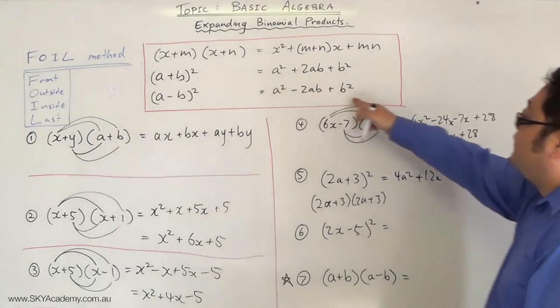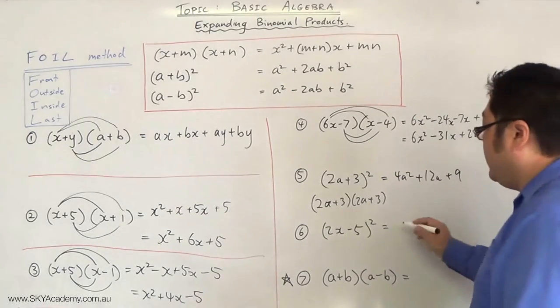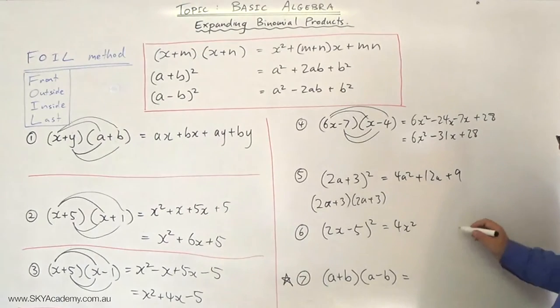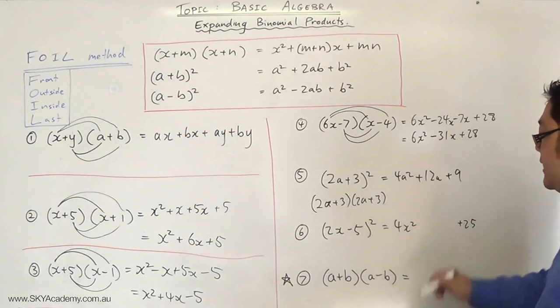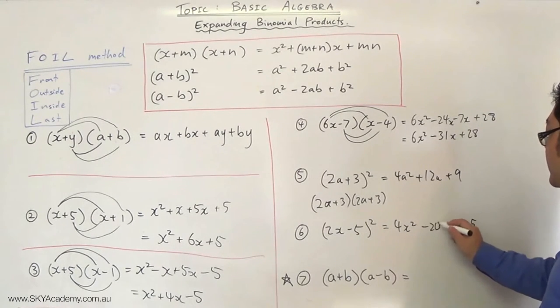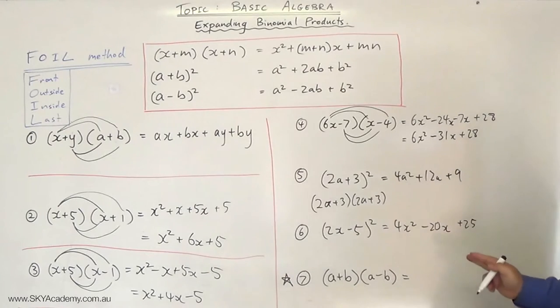So we'll do the second one the same way. We're going to substitute into this formula. First term squared is 4x². Last term squared, minus 5 squared, is plus 25. And then it's the middle two terms multiplied together, which is minus 10, and then doubled, so it's minus 20x. That's your answer.